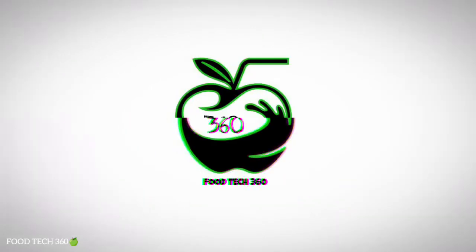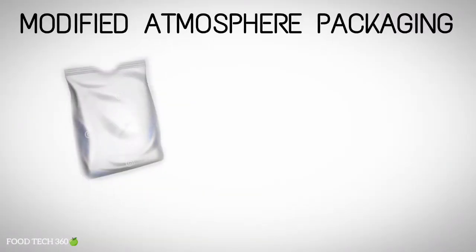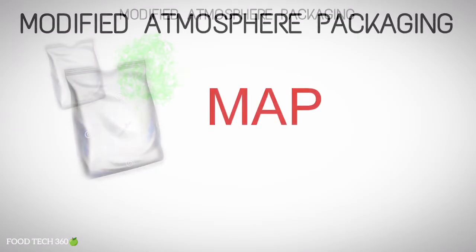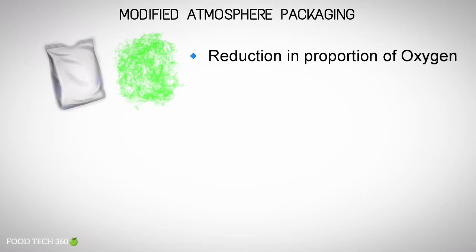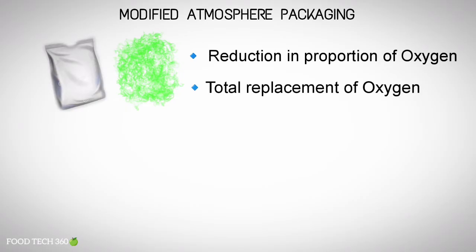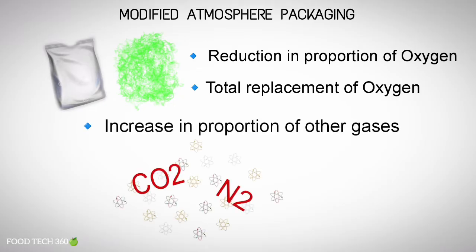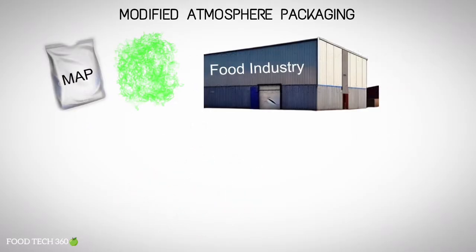Hello friends, welcome back to our channel FoodTech360. Modified atmosphere packaging — MAP. The MAP process uses special gases that control reduction in proportion of oxygen, or total replacement of oxygen, or an increase in the proportion of other gases such as carbon dioxide or nitrogen.